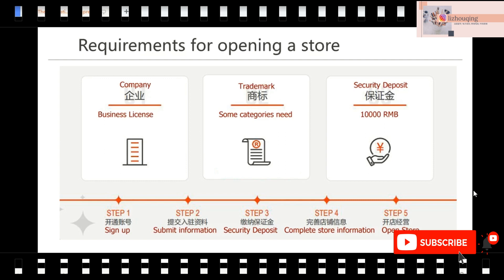There are five steps to open a store. Step one: sign up. Step two: submit information — that's the information about your company and your tax information. Step three: the deposit. Then step four and step five: complete your store information. Then you can open a store and post your listings onto AliExpress.